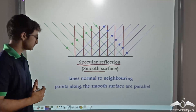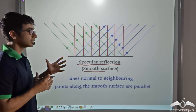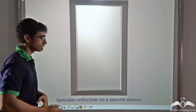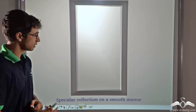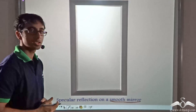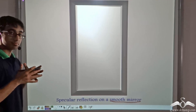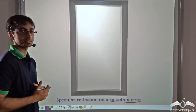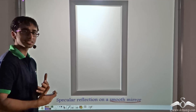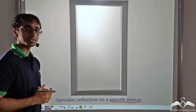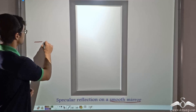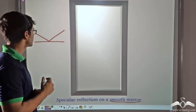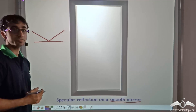In specular reflection, the light coming in parallelly is reflected parallelly. An example of specular reflection is a smooth mirror — when a parallel beam of light falls on a smooth mirror, the reflected beam also has parallel rays. Another example is the first animation: a ball falling on a smooth surface is reflected at the exact same angle, which is also an example of specular reflection.